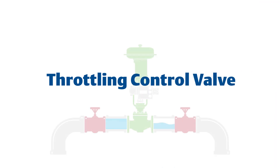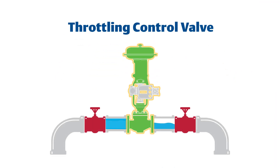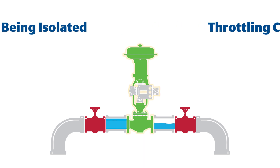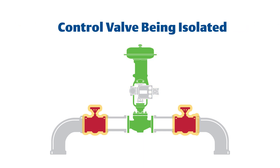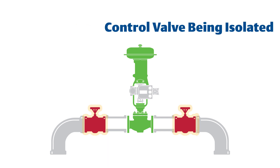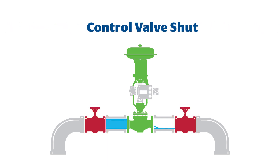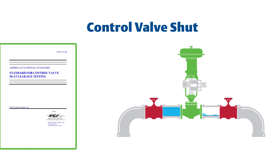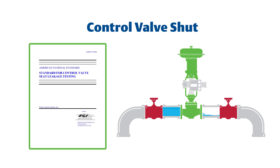A control valve's primary function is to accurately control the process media flowing through it, whereas an isolation or shut-off valve's primary function is to stop the process flow completely and prevent it from going further downstream. Because their purposes differ, they are often not held to the same design or performance standards.